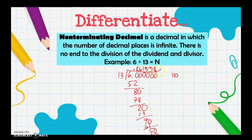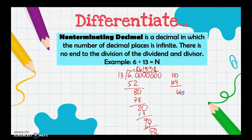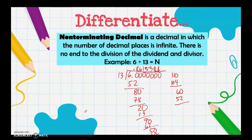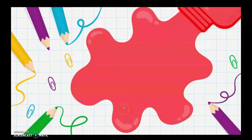We get 8, that's 24, carry 2, remainder 10. Add another zero, then divide again — we get 4, that's 52. As you can see, the number of decimal places is infinite; there is no end to the division. That is what you call a non-terminating decimal.